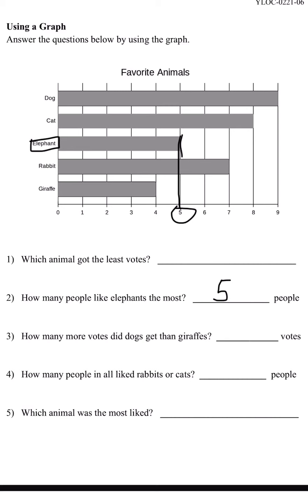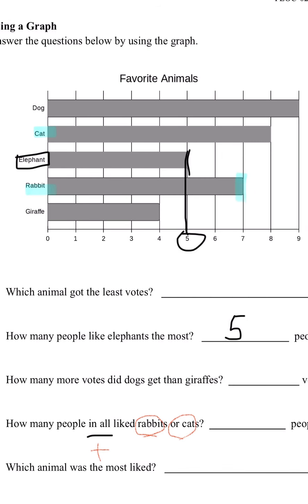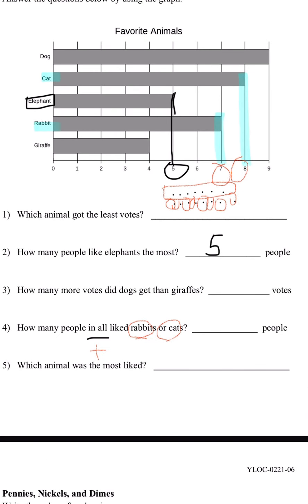Now let's try number 4 — how many people in all liked rabbits or cats? In all means we have to add. Cat is over here, and the rabbit is over here. Rabbit ends at 7, and the bar for the cat ends at 8. So we're going to do 7 plus 8. We count and get 15. So 15 people in all liked rabbits or cats.